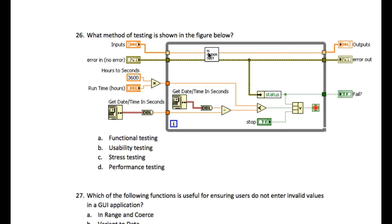If you look very carefully, there is a timer which is measuring the time. In this case, it is supposed to run for certain hours, and it is checking whether the VI under test is going to throw an error or not within that specified amount of time.